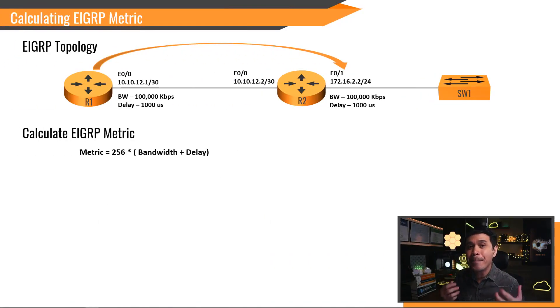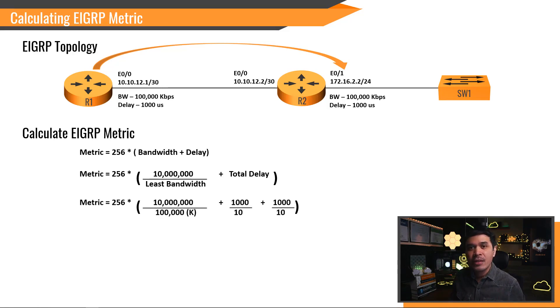Calculating EIGRP metric. We already have this formula: 256 multiplied to the sum of bandwidth and delay. It's actually not that simple. Because under bandwidth, it should be the reference bandwidth with a value of 10 to the 7th power or 10 million or 10 mega over the least bandwidth plus the total delay. Now let's talk about more detail. Let's talk about the least bandwidth. This value should be 100 mega because this is the value of both R1 interface E0-0 and R2 interface E0-1.